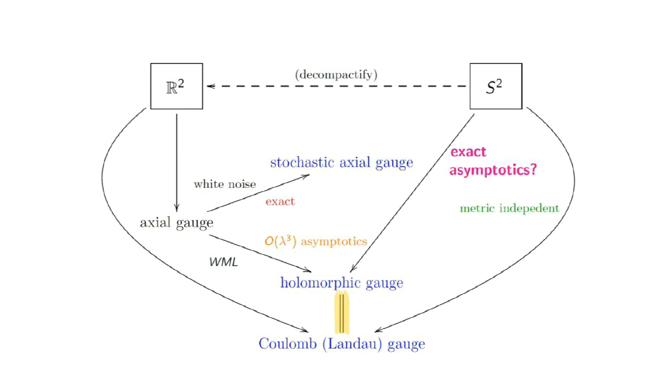My results on Coulomb and holomorphic gauge thus far are structural results. Now I'll present some of my computational results. I've been able to compute Wilson loop expectations when I decompactify to ℝ². Let's look at this part of the diagram. For holomorphic gauge on ℝ², I show the following.